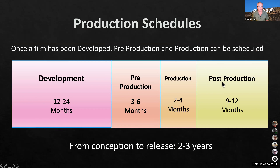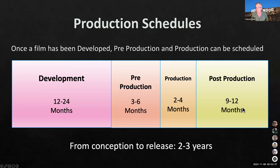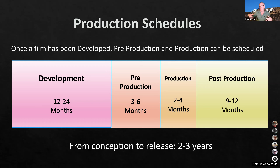Here's the production schedule: development takes one to two years — that's the largest phase, just to get the money and get it off the ground. Pre-production is three to six months. Production is actually the shortest at two to four months. Post-production is nine to twelve months. So from conception to release, for most films is going to be two to three years. Bigger films may take even longer because of elaborate shots, CGI, and so forth.